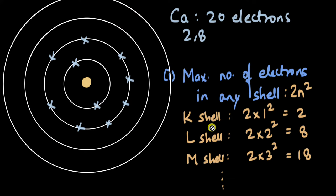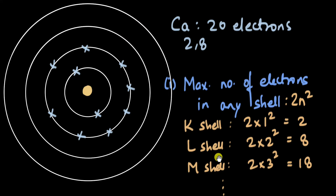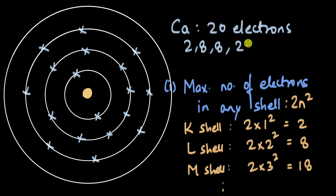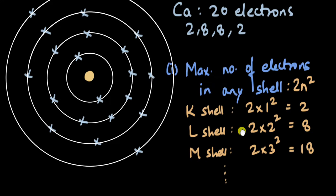In fact, calcium has one more shell. The third shell (M) has eight electrons, and the remaining two electrons go into the outermost shell. So the correct configuration is 2, 8, 8, 2 across shells K, L, M, and N. But the third shell can hold a maximum of 18 — so why does it only have eight? This brings us to the second rule.